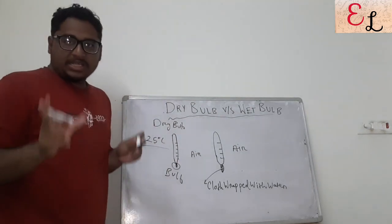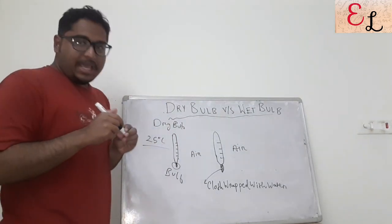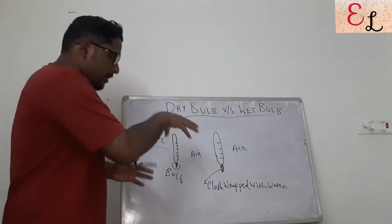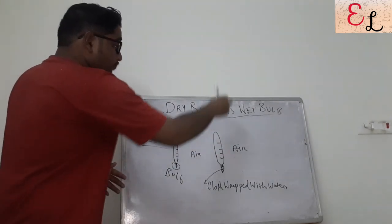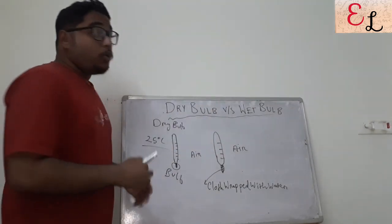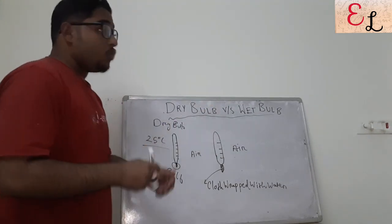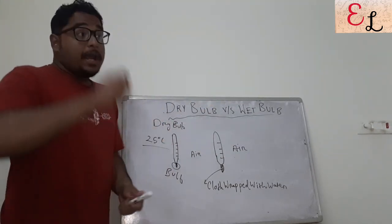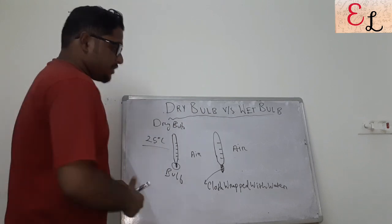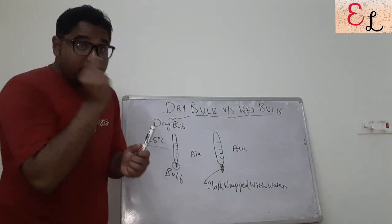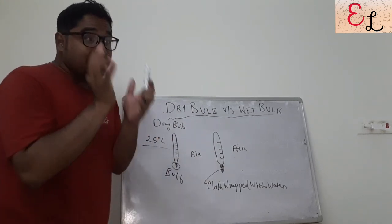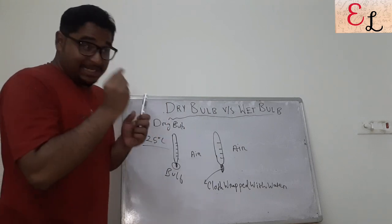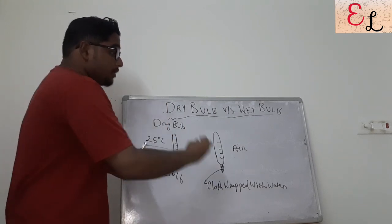So dry bulb temperature is straightaway the temperature of the air or the atmosphere. Supposedly it is 25°C — it directly measures the temperature of the air. Now talking about wet bulb temperature, which many people confuse. As the name suggests, the bulb of the thermometer is covered with a cloth that is wet.